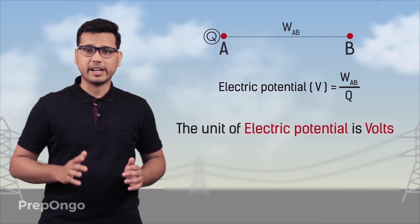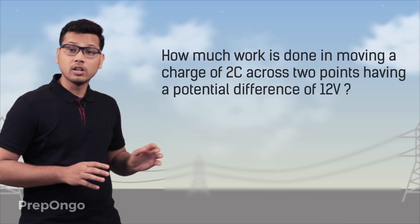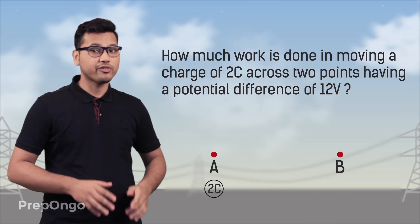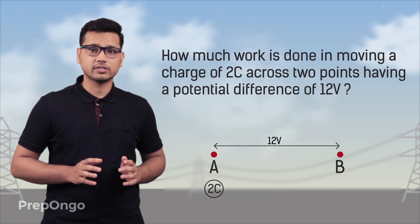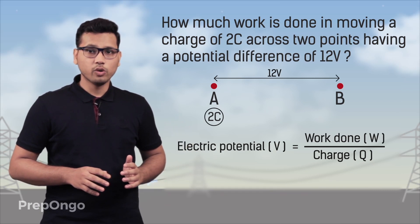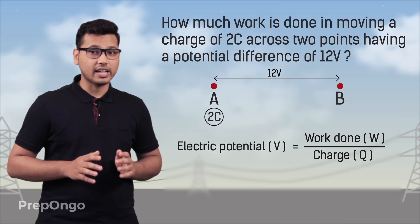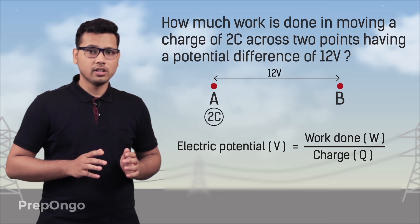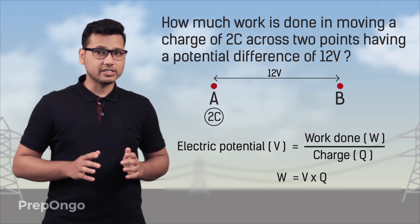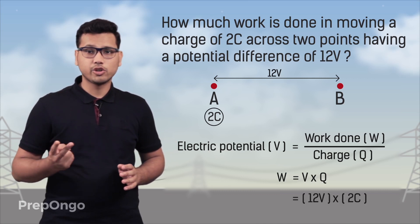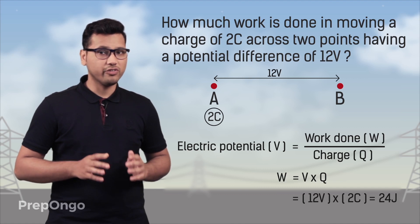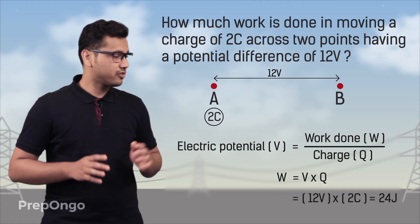Now let us understand this concept with an example. We have to find the work done required to bring a 2 coulomb charge from point B to point A if the potential difference between these two points is 12 volts. We know that electric potential equals work done upon charge, so we can find the work done as potential difference multiplied by charge. The potential difference is 12 volts and the charge is 2 coulombs, so multiplying these gives 24 joules. Therefore, 24 joules of work done will be used to bring the charge from point B to point A.